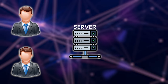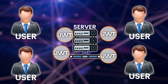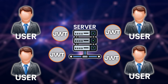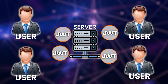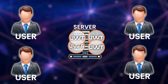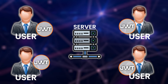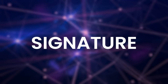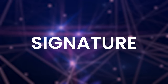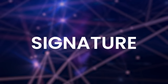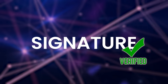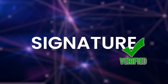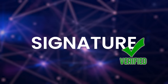The next use case of JWT tokens is an information exchange. Because JWT tokens can be signed using a public-private key pair, you can be sure that the sender of the message or the data is who they say they are by validating their signature. Additionally, since a signature is calculated using the header and the payload, you can verify that the content in the message has not been tampered with.